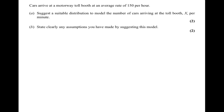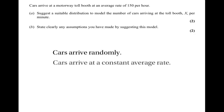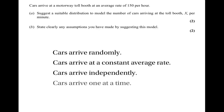We're asked to state the assumptions this model makes. We must assume that cars arrive randomly, that they arrive at a constant average rate, that cars arrive independently, and that they arrive one at a time. Although there are four assumptions, only two marks are given here, so presumably only two need to be stated.